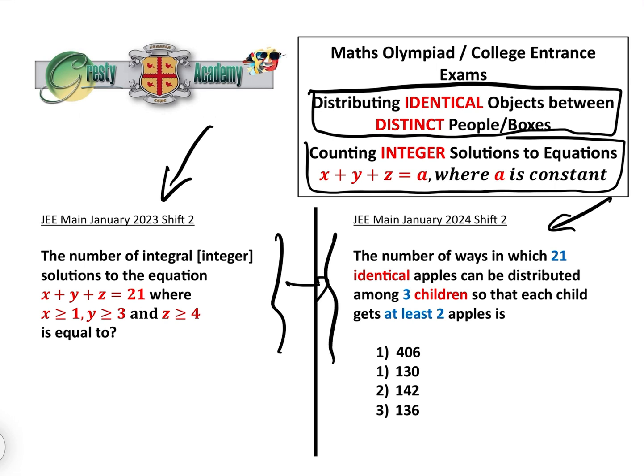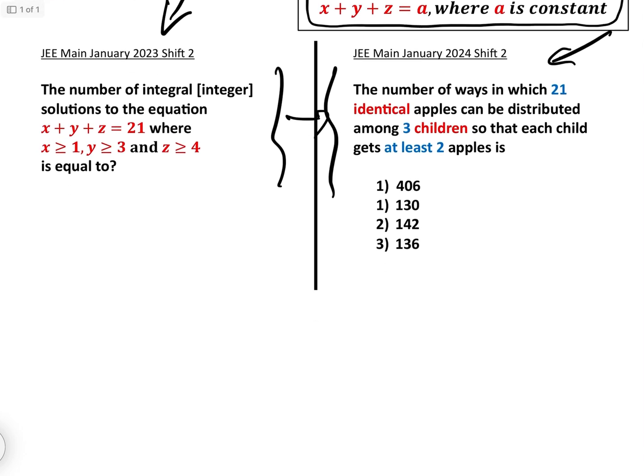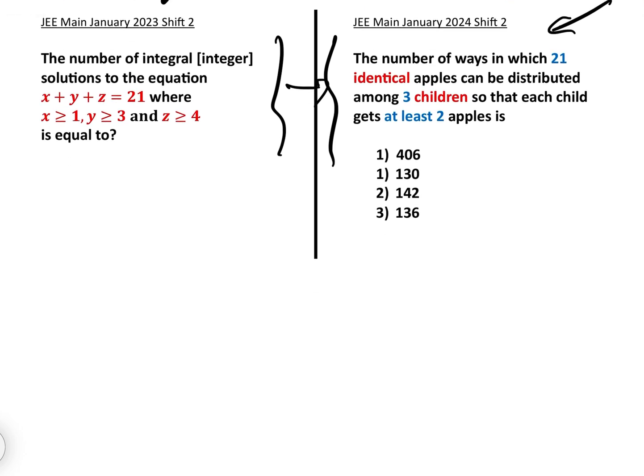How we did this one on the right. Basically what we did was we had our 21 apples and we said we're going to distribute between the three children using stars and bars. Because each child gets at least two, we're going to take off six of those 21 apples.